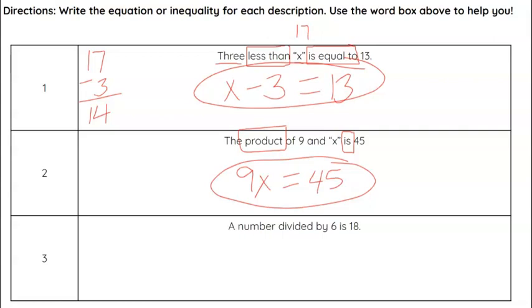Next one, a number divided by 6 is 18. So a number is another way of saying a variable. We don't know what number it is. So we can use x. So x divided by 6 is, means equals, 18.